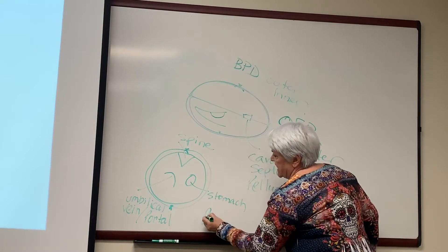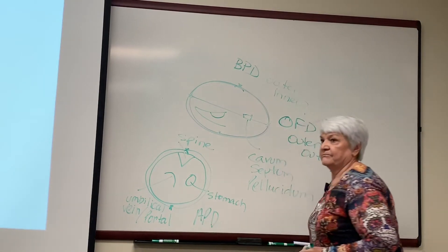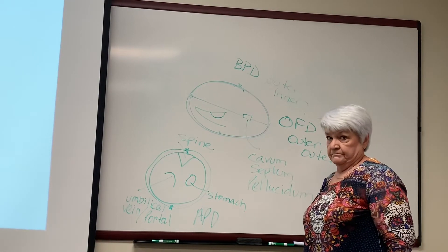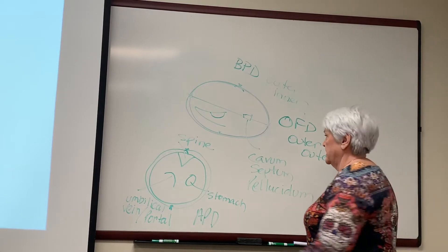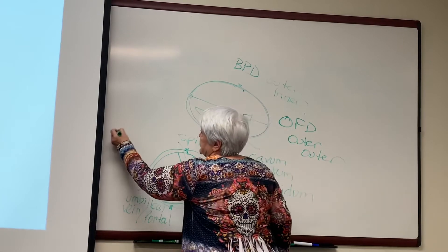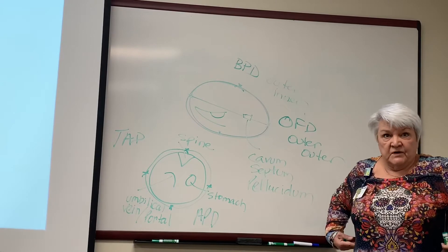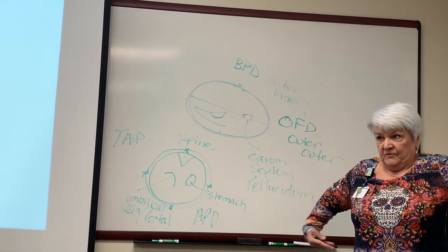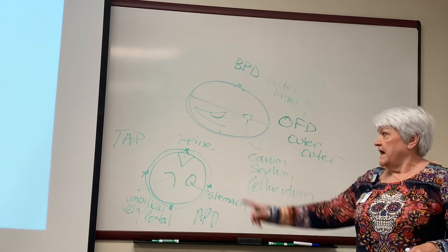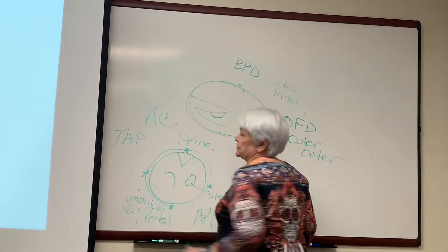That's going to be my APD, anterior posterior diameter. I'm going to measure this. TAD, transverse diameter. From this side to this side. And that gives me my abdominal circumference.